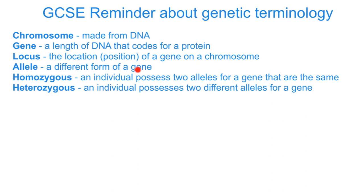An allele is a different form of the gene. The term homozygous is used when a person has two alleles for a gene that are the same, like big T big T. Whereas heterozygous is when an individual possesses two different alleles for a gene, so big T little t.